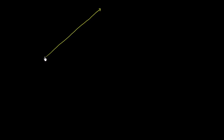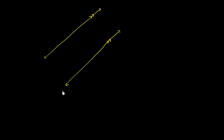Let's say that we have two parallel lines. So that's one line right over there, and then this is the other line that is parallel to the first one. So these two lines are parallel — this is the symbol right over here to show that these two lines are parallel.